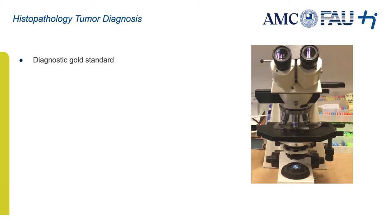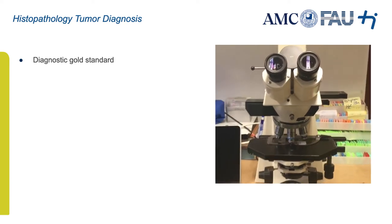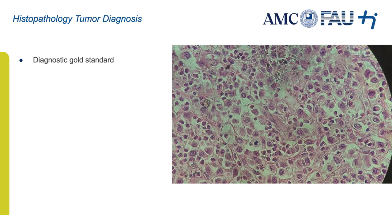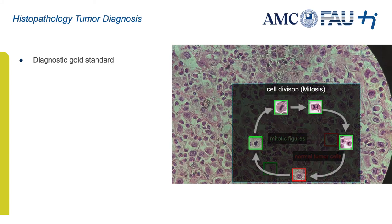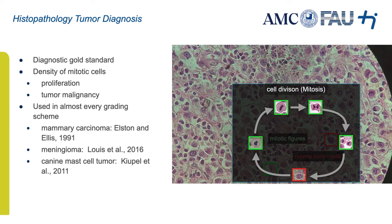If the malignancy of a tumor is to be investigated, the gold standard is histopathology — taking a thin slice of tissue, staining it, and investigating it under the microscope. Tumor tissue consists of a large number of cells, but some are of particular interest. When the tissue was prepared and all cellular processes halted, some cells were just undergoing cell division. We call these cells mitotic figures. The rate at which mitotic figures are present is related to tumor growth and thereby tumor malignancy, which is why the count of mitotic figures per area is a decisive factor in many grading schemes.